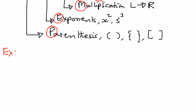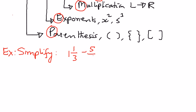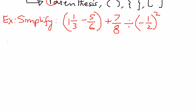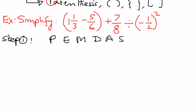In this example, we want to simplify this complex fraction. We have 1 and 1/3 minus 5/6 within parenthesis, plus 7/8, divided by minus 1 half — this whole thing raised to the power of 2. So as a solution, we'll break it down into steps. Step 1: we want to use the PEMDAS order of operations process.